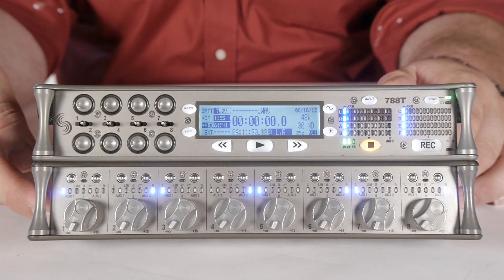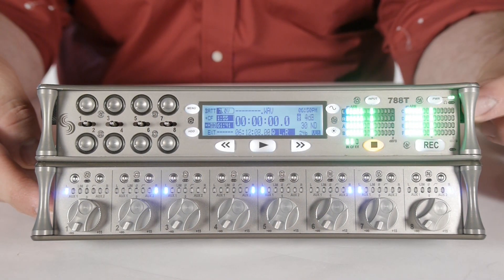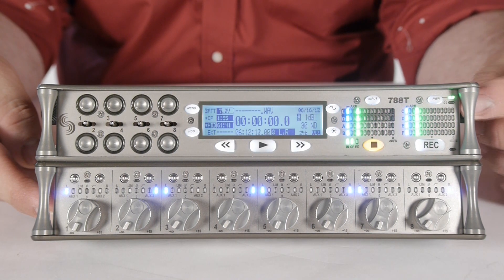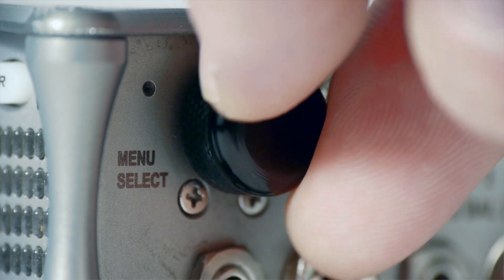To activate your slate mic, simply press and hold button. To attenuate the slate mic gain, press and hold the slate mic button while turning the multi-function rotary knob.